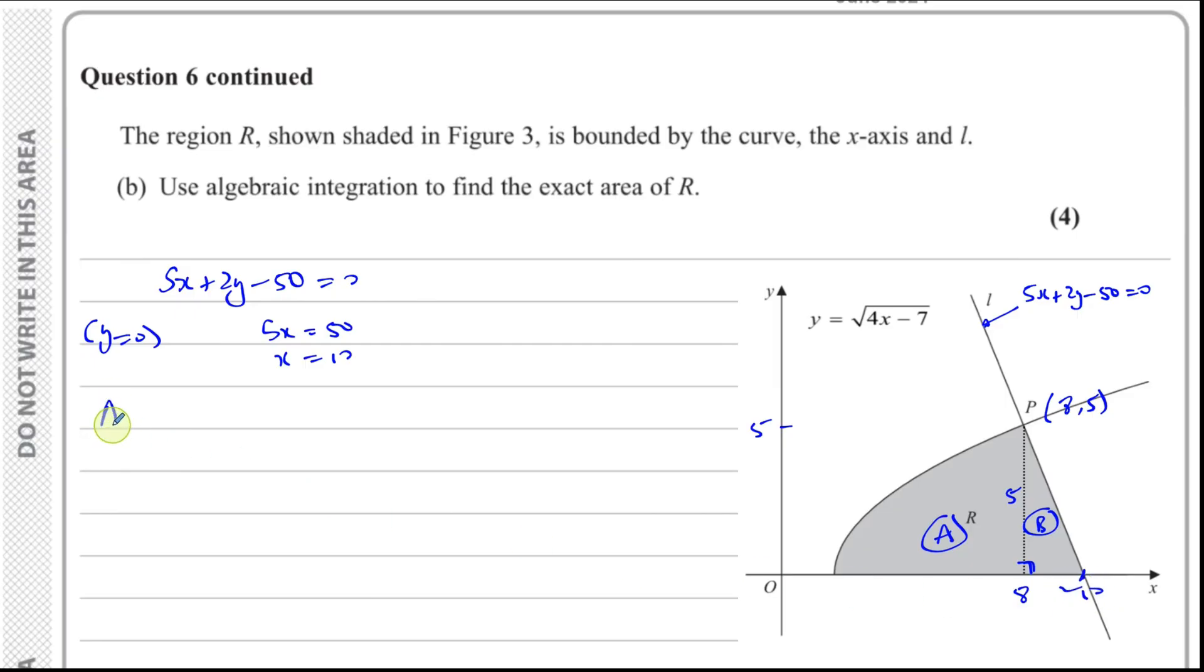So the area of triangle B is going to be a half times the base times the height, which is a half times 2 times 5, so it's going to be 5 square units. That's the area of triangle B.